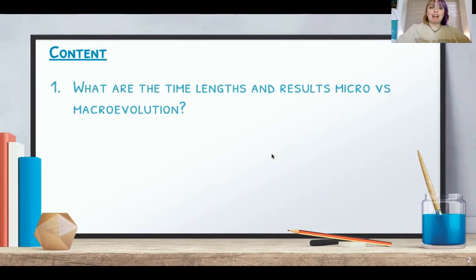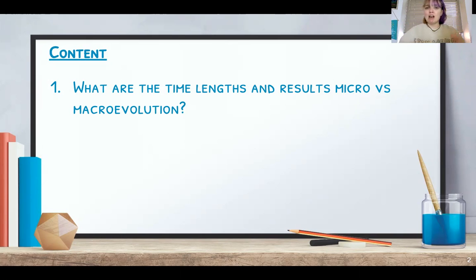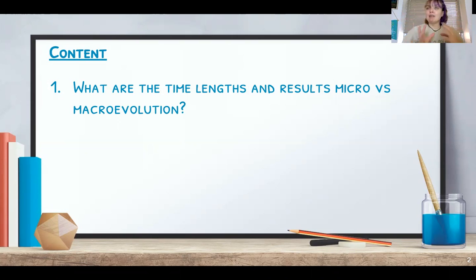The first question: what are the lengths of time and the results of micro versus macro evolution? Micro evolution has to do with natural selection — those tiny adaptations we see in different organisms over time. We can actually see micro evolution happen from one generation to the next or a couple of generations down. Macro evolution involves big evolutionary changes that take hundreds of thousands to millions of years. This is when a species becomes so different through all those tiny micro adaptations that it actually divides genetically — they become their own species. That's speciation; that's macro evolution.